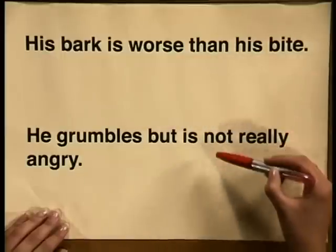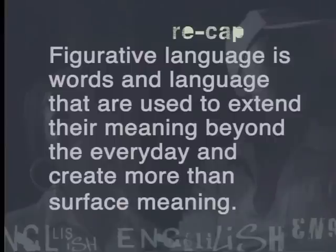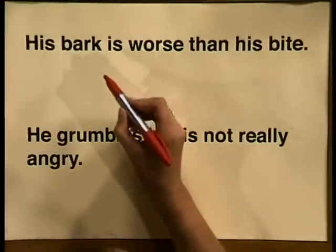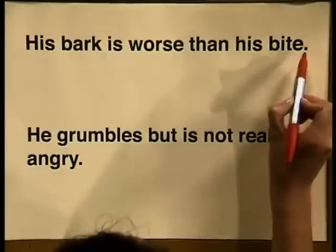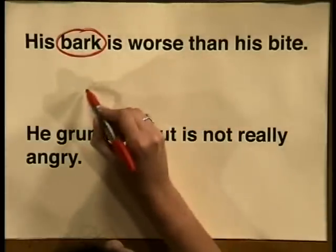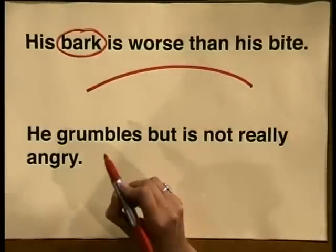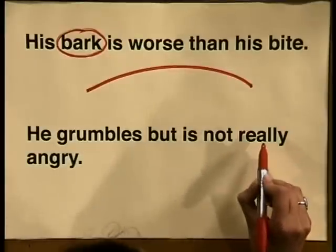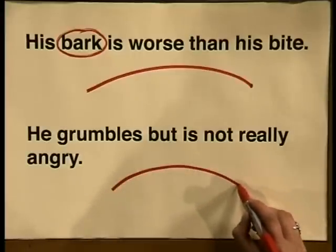Before we look at this example, let's quickly recap what we've learned so far. Figurative language is words and language that are used to extend their meaning beyond the everyday and create more than surface meaning. Looking at 'His bark is worse than his bite' — a person does not really bark, but is in this context being compared to a dog. This is figurative language. The second sentence, 'He grumbles but is not really angry,' means exactly what it says — that is literal language. In these two sentences we convey the exact same meaning, but by using figurative language in sentence one, it carries a far more emotional and passionate message.